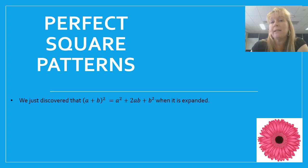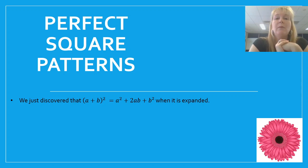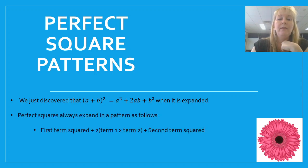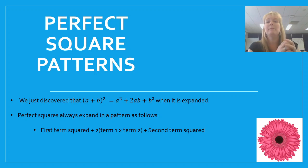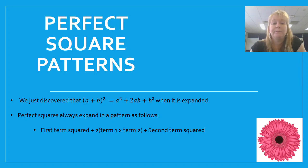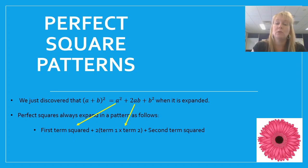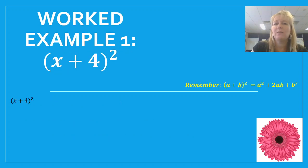When we expand a plus b in brackets squared, we get a squared plus 2ab plus b squared — three terms that always form a pattern. The first term is the first term from the original brackets squared. The middle term is two times the first term times the second term — that's 2 times a times b. And the last term is the second term squared, that's b squared. So: first term squared, plus two times term one times term two, plus second term squared.